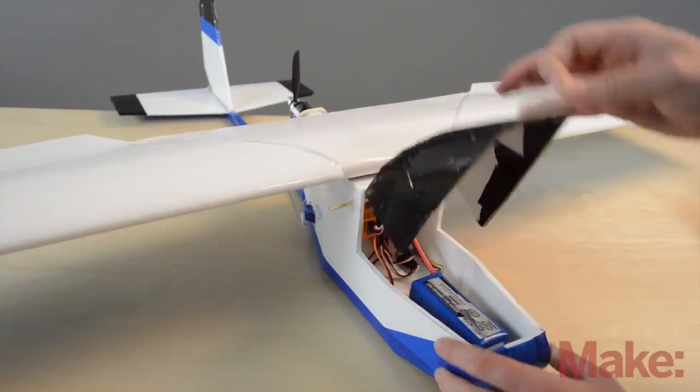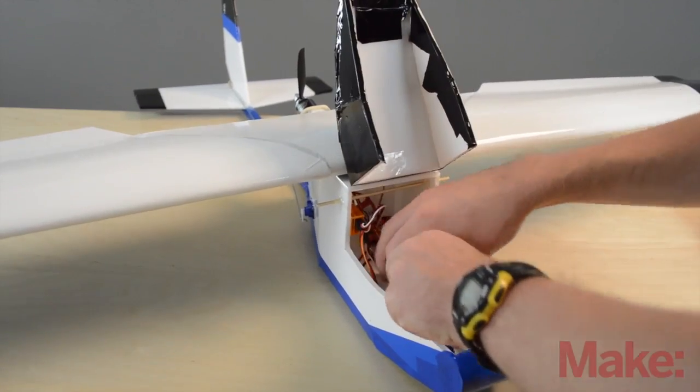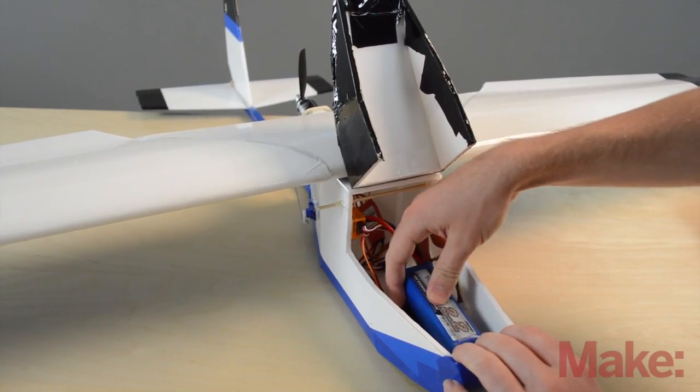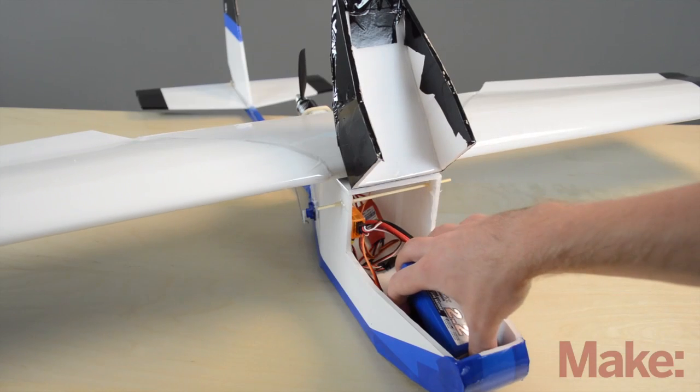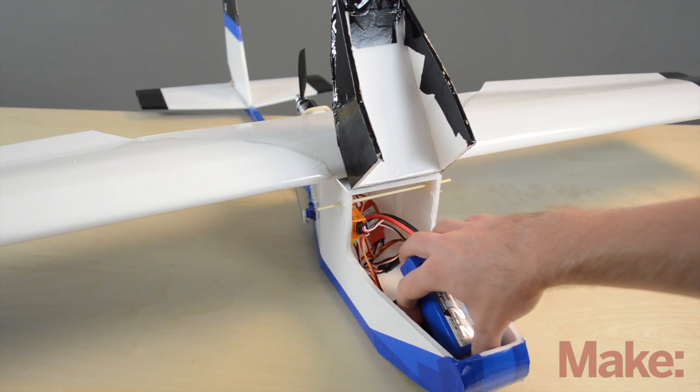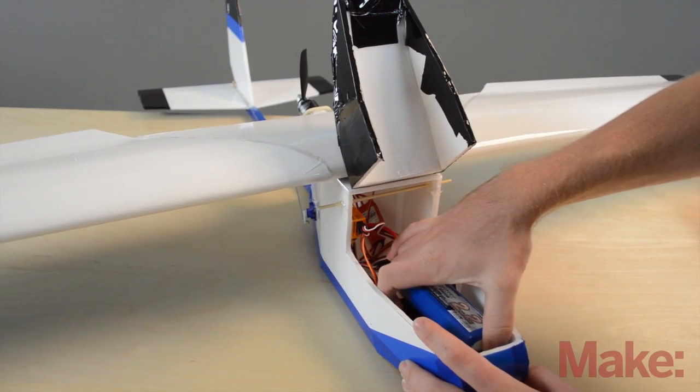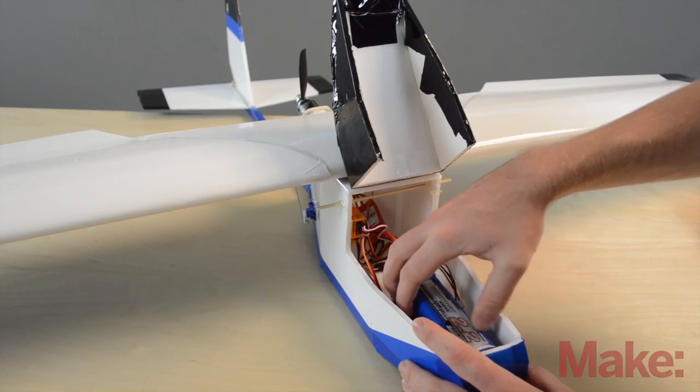If it noses down, then you're too nose heavy and you can bring the battery a little farther back. Now when you get it perfect, it should stay perfectly level when you let go of it and then come back into your hand.